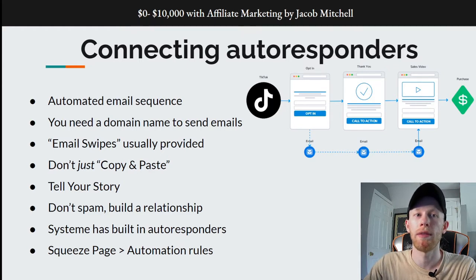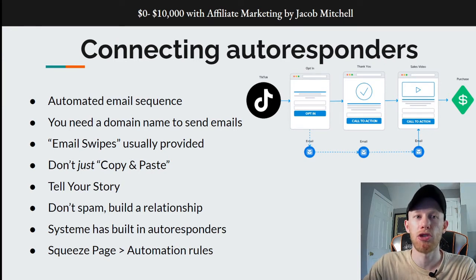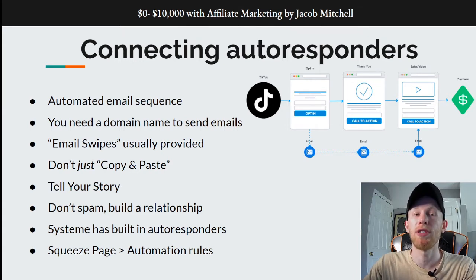It's very important to tell your own story. Obviously you can't tell my story in your emails, so make sure you share your own personal struggle and your own experiences with your audience. Avoid sending spammy emails — you want to focus on building a relationship with the people on your list. If you can build a long-term relationship with these people, they can potentially be customers for your affiliate links for many years to come.